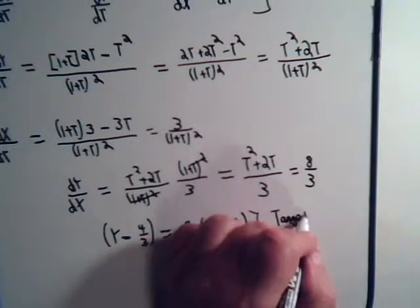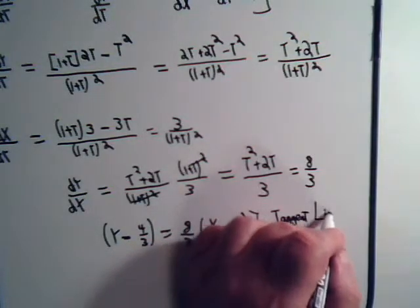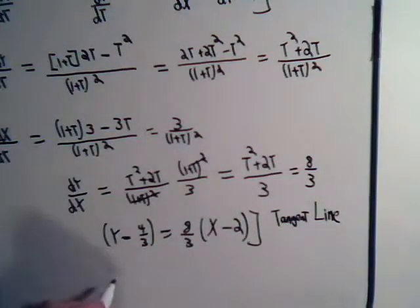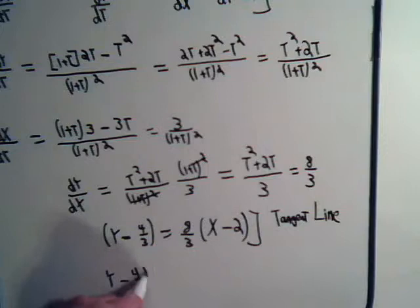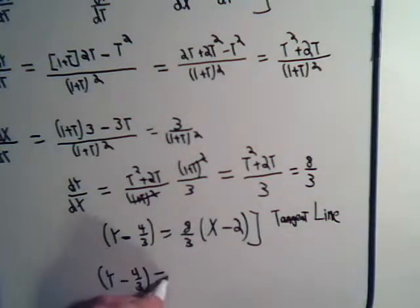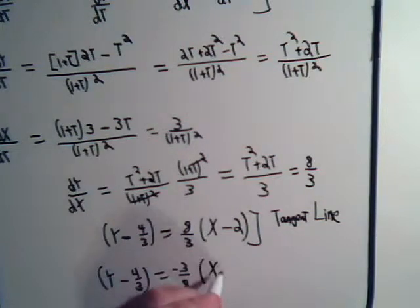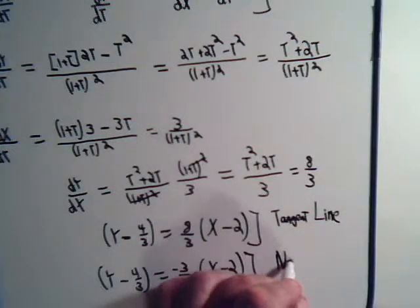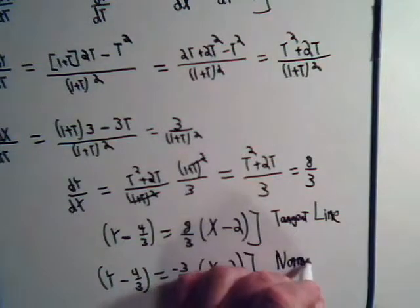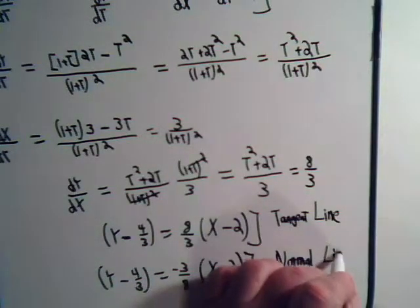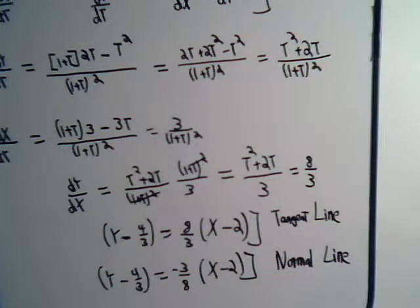We can also determine the equation for the normal line. That's just y minus 4 thirds, and that will equal minus 3 eighths, the negative reciprocal of that slope, times x minus 2. And that's it, there's no more to it than that, it's a pretty simple procedure, pretty straightforward.